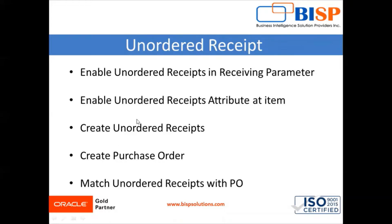First we have to enable the checkbox 'Allow Unordered Receipt' in the receiving parameter. Second, we have to enable the unordered receipt attribute at item level. Next we have to create an unordered receipt, and after that we create a purchase order and match that purchase order with the unordered receipt.